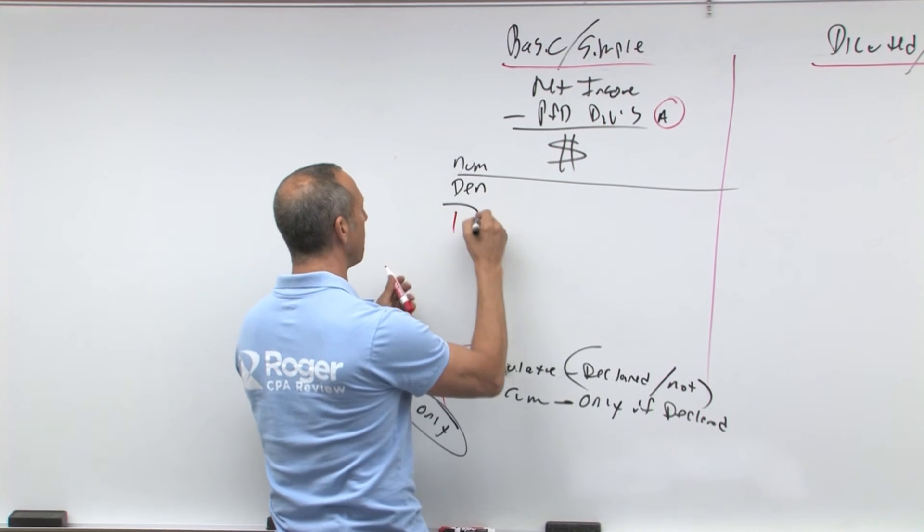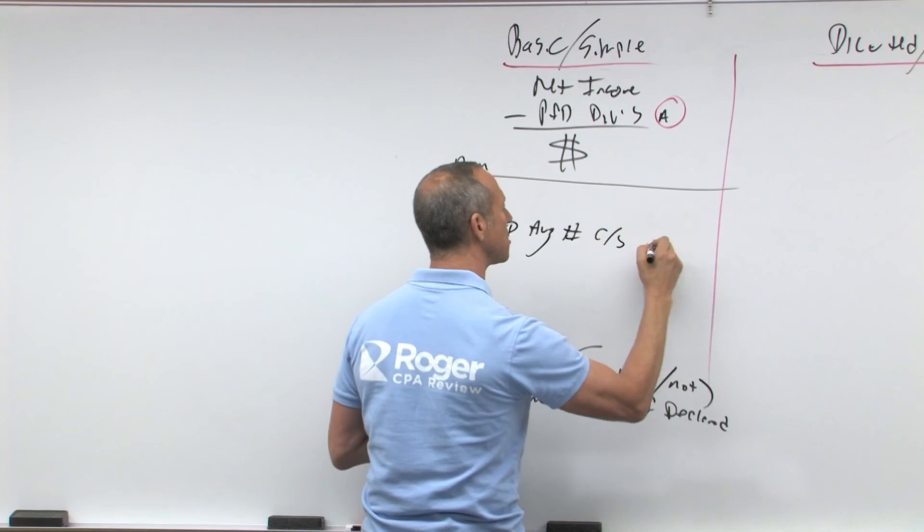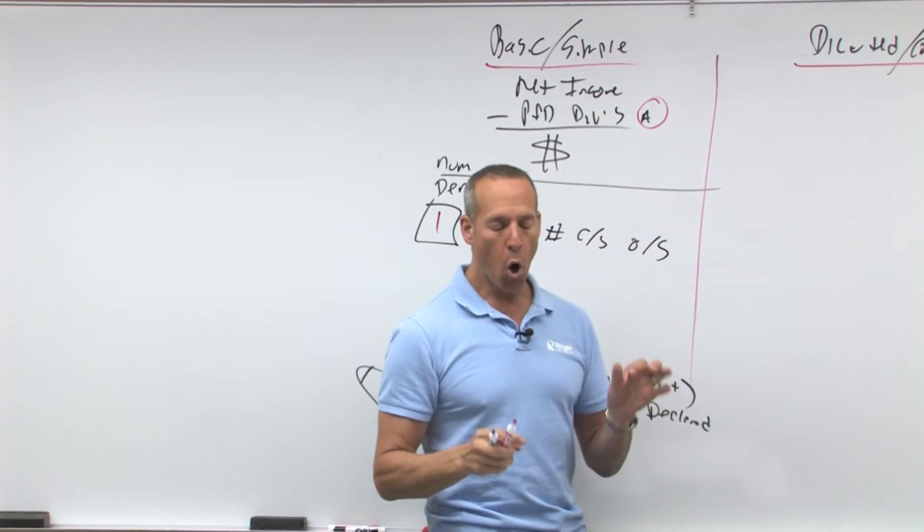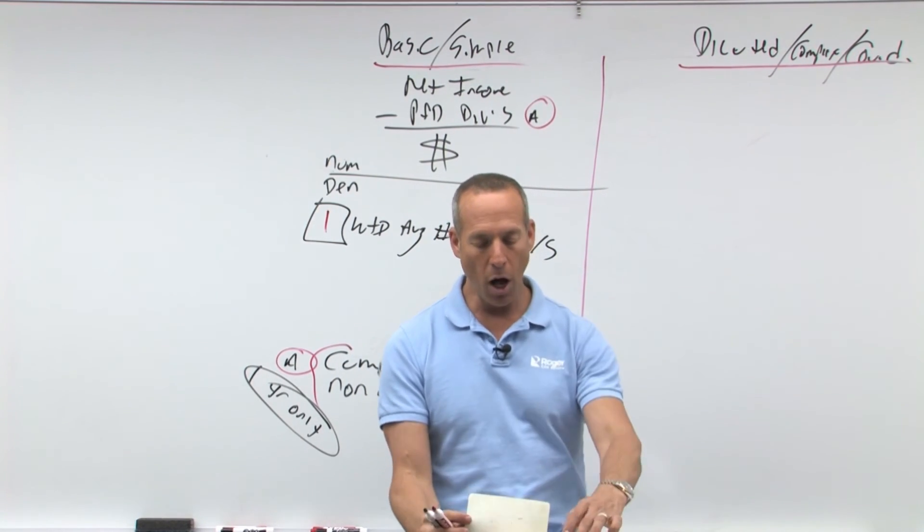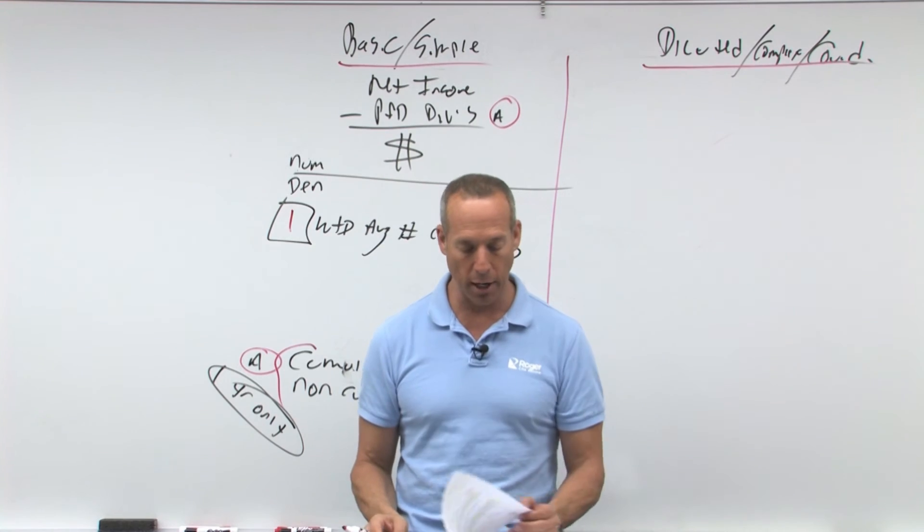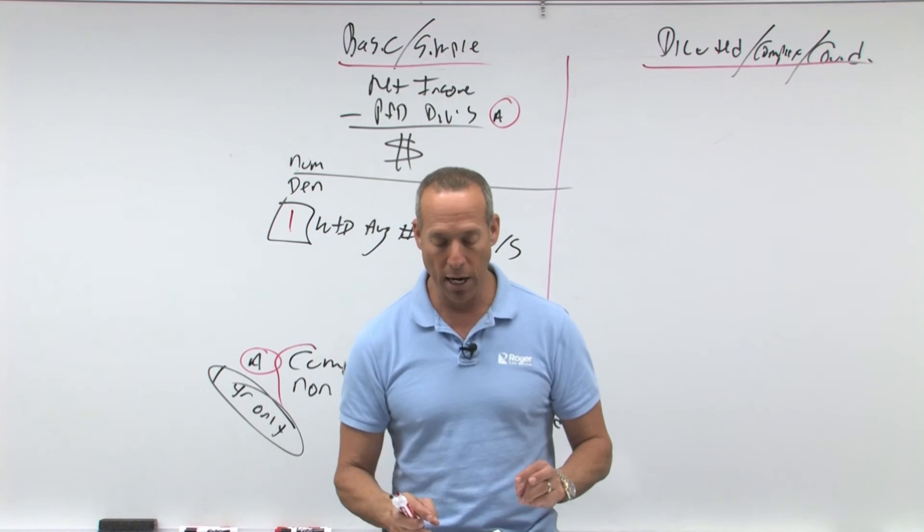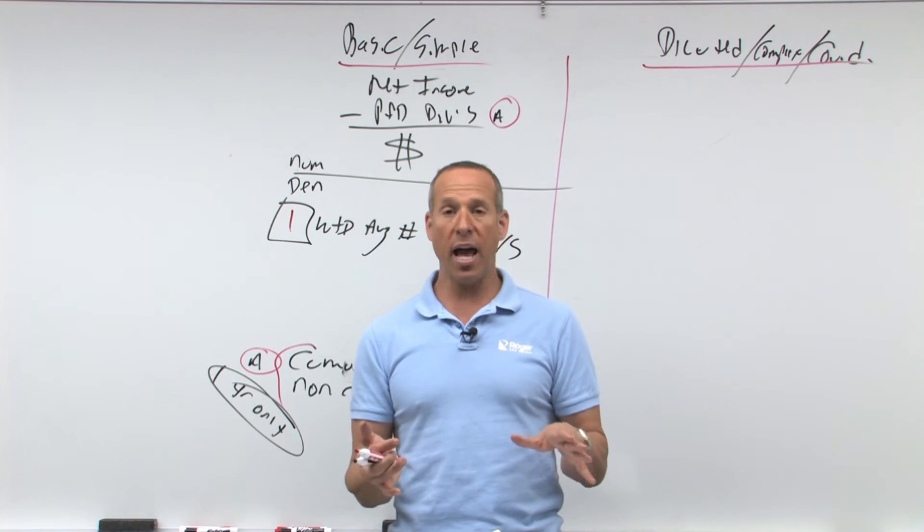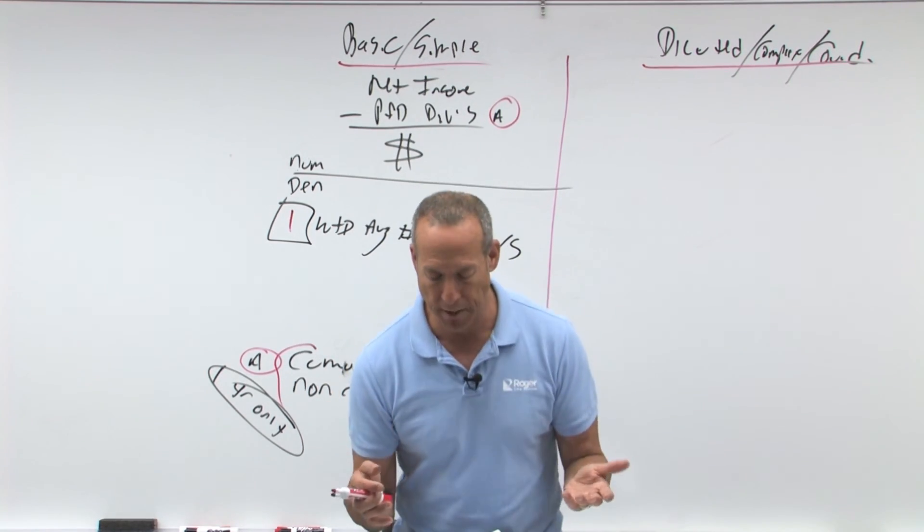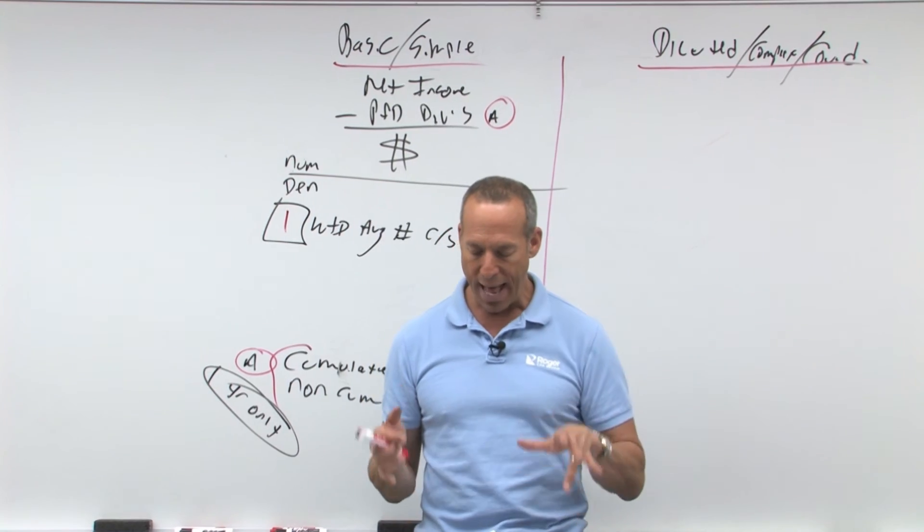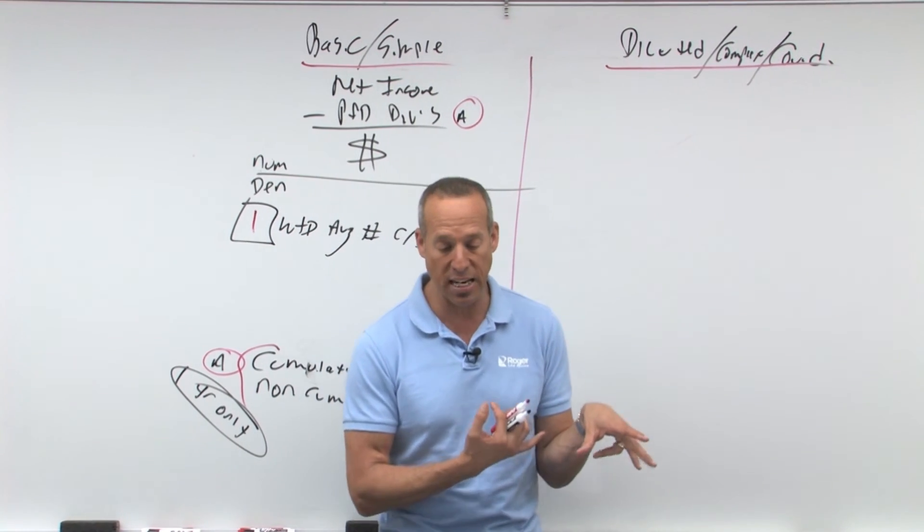I'm going to divide that by what I call number one. And this stands for the weighted average number of common stock outstanding. Now when we talk about the weighted average number of common stock outstanding, that says on average, how many shares were outstanding for the entire year. Now what that means is actual sales for example, that would be like stock dividends, stock splits. All of those are included as if they were applied what we call retroactively.